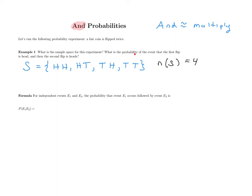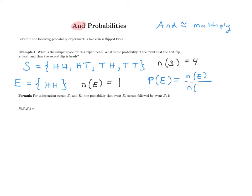Next it says: what is the probability of the event that the first flip is heads and the second flip is also heads? I'm going to define this as E, written as a subset of the sample space — heads first and heads second, which is one element. The number of items in this event is one. Using the formula from the previous lesson, the probability of E is the number of things in E divided by the number of things in the sample space — one over four.